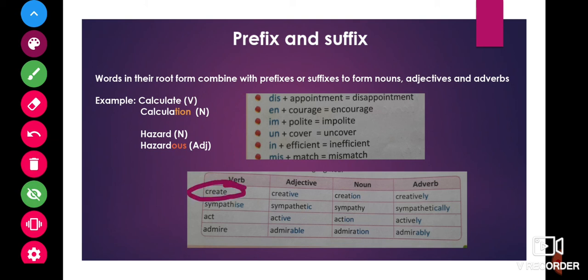Create is the root form of the verb. When we add the suffix i-v-e, create becomes an adjective. When we add i-o-n as a suffix, it becomes a noun. When we add l-y, it becomes an adverb.